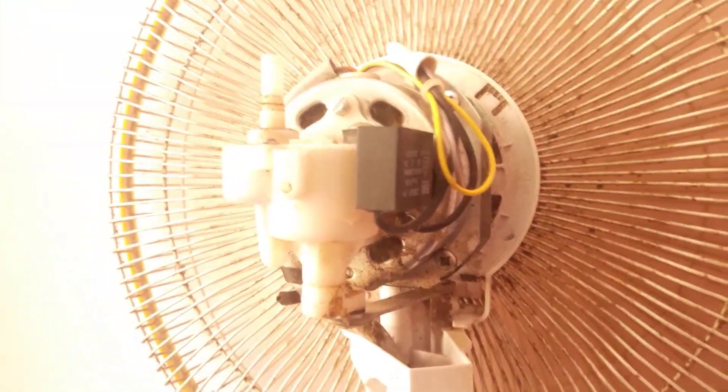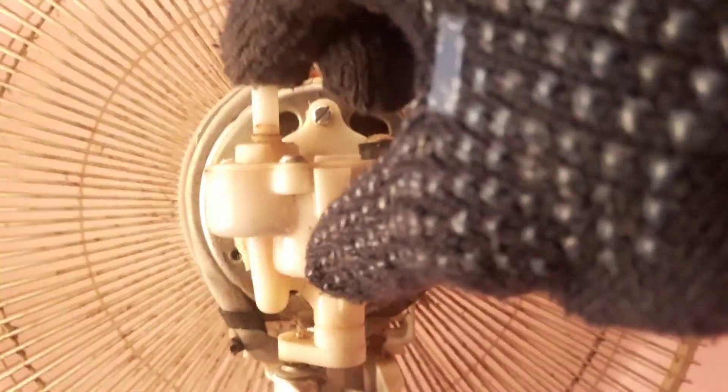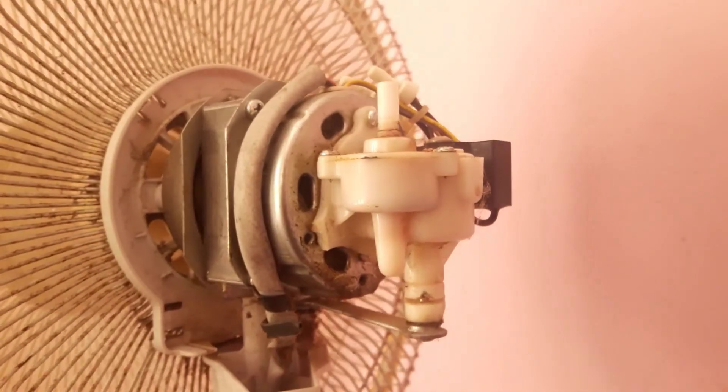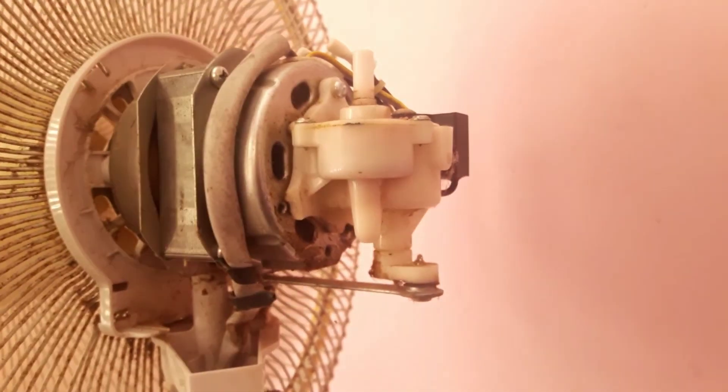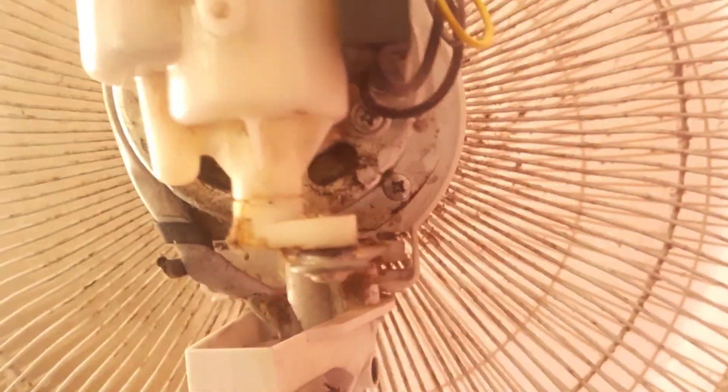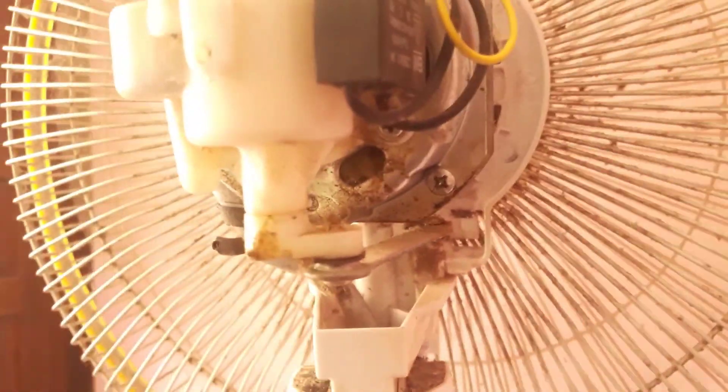When the lever at the top is pushed down, the motor shaft is connected to the plastic shaft over here and starts rotating. And the strip seems to be moving with a circular and a linear motion as one of its ends is connected to the fan body.